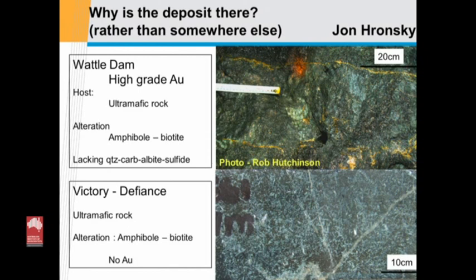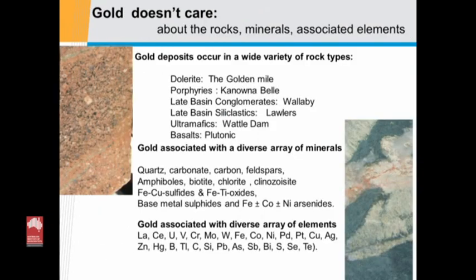There are some horrible truths about gold. It just doesn't care — it doesn't care about rocks, it doesn't care about minerals, it doesn't care about associated elements. You can find orogenic gold in all the rock types in the Eastern Yilgarn gold fields, basically. You can find gold associated with quartz, but gold with no quartz. Same for carbonate, same for sulfides — on it goes. There are no simple answers about rock association, mineral association, or indeed element association.